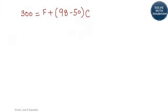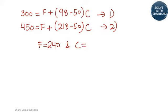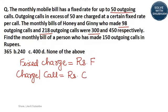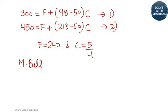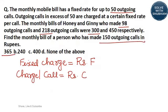Similarly, Guinea was charged ₹450; out of 218 calls, 50 are free, and the remaining are charged at ₹c per call. There are two equations and two unknowns. Solving them, we get f = 240 and c = 5/4. For a person who made 150 outgoing calls: the bill = 240 + (150 − 50) × (5/4) = 365. The answer is option number 1: ₹365.